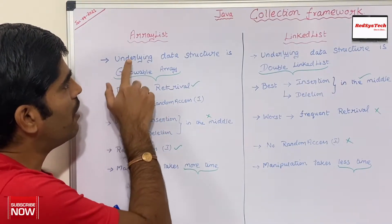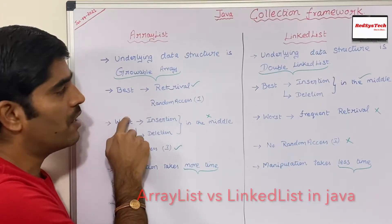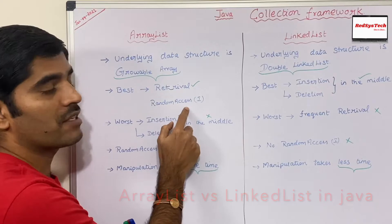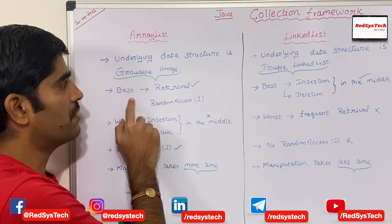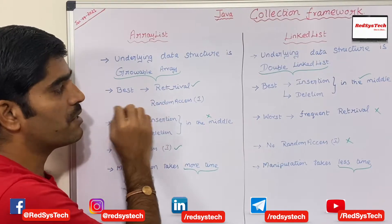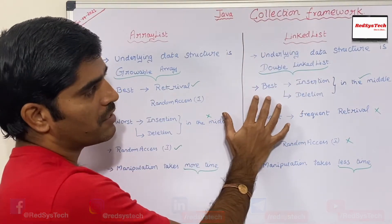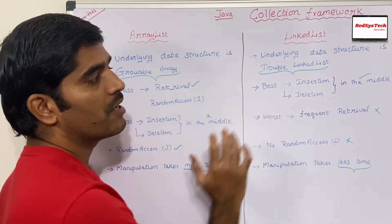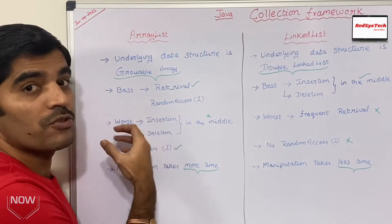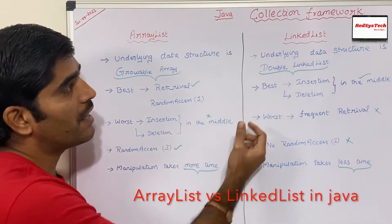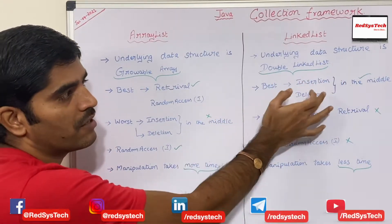In the case of ArrayList, the best choice is when you want to retrieve data, because ArrayList internally implements the RandomAccess interface. Because of this, you can easily retrieve elements. If you use ArrayList, it is the best choice for retrieval. In the case of LinkedList, the best choice is to insert or delete in the middle of the list.